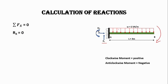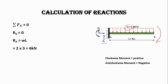Now let's calculate the vertical support reaction. In this case we have a UDL acting on the beam of two kilonewtons per meter, so the total load acting on the beam will be considered as W×L. The Ra reaction will be six kilonewtons after multiplying W with the length.